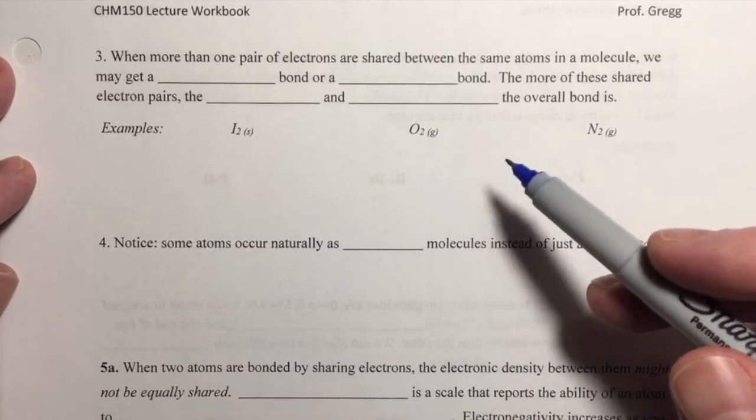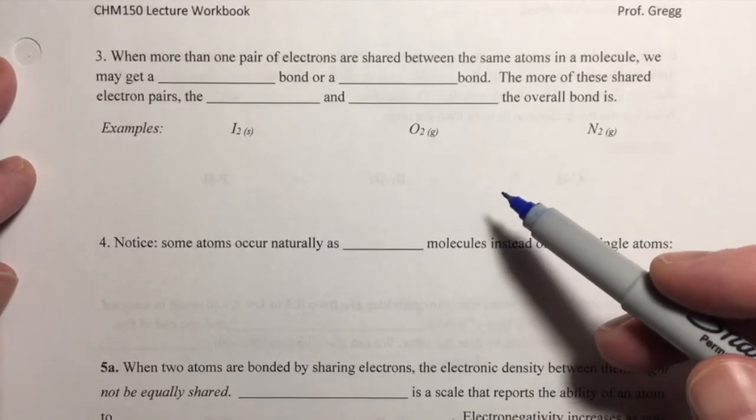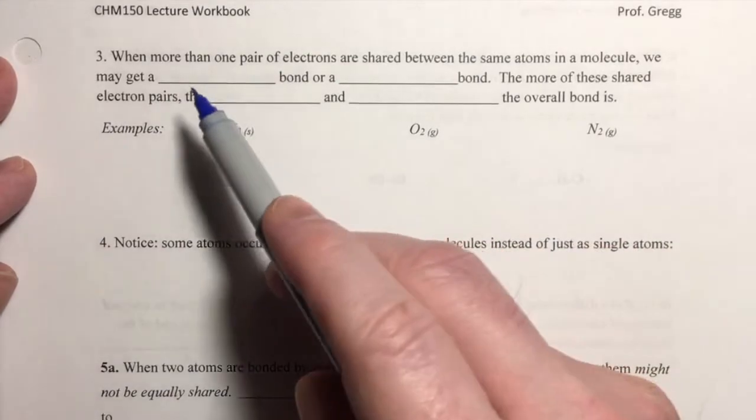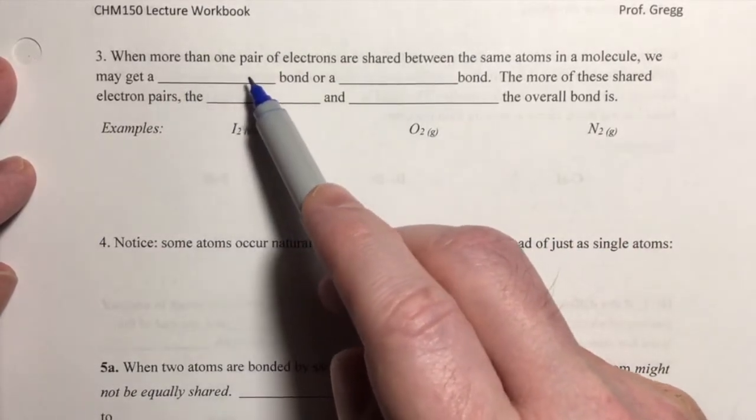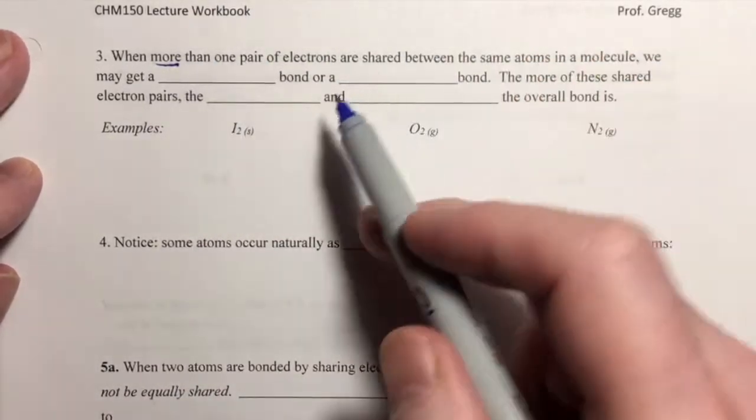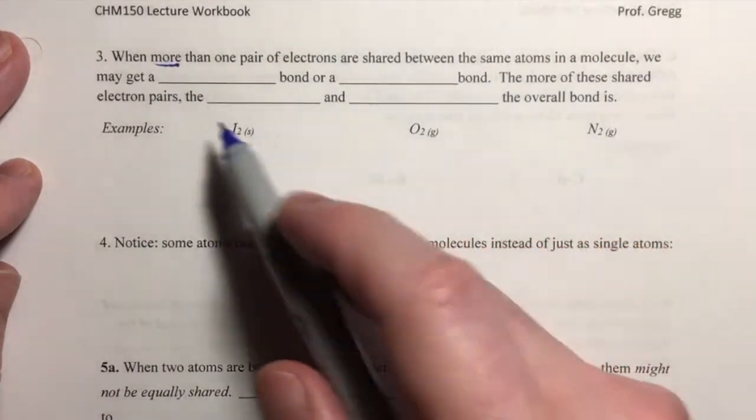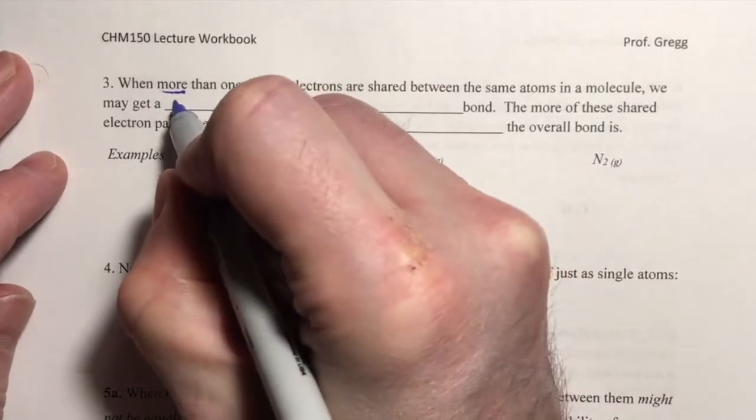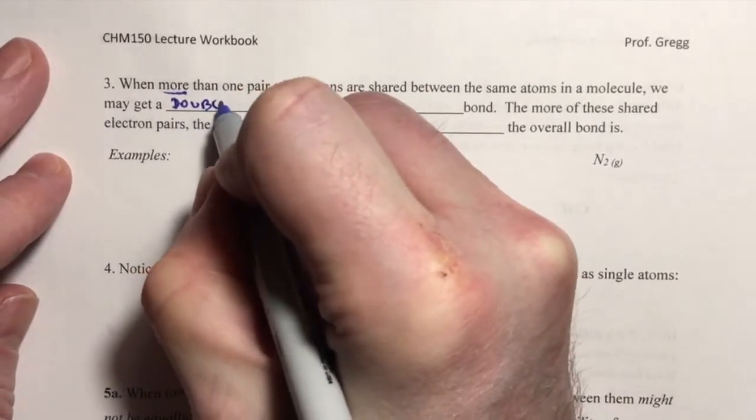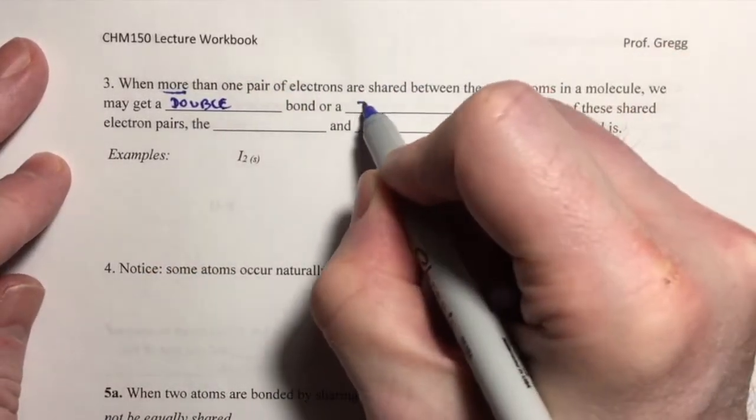But now we need to expand that and talk about double bonds and triple bonds. When you have more than one pair of electrons that are shared between the same atoms in a molecule, we may get a double bond or a triple bond.